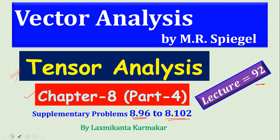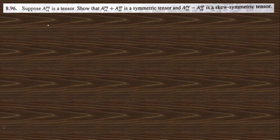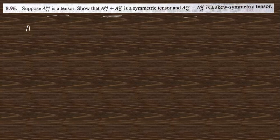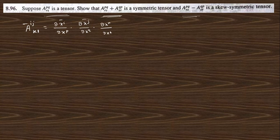Let us start with supplementary problem 8.96, which says that this is a tensor, so that the summation is a symmetric tensor and the difference will be a skew-symmetric tensor. Since this is a tensor, we can write the transformation property of the tensor: that is del x^i bar by del x^p, del x^k by del x^r, del x^j bar by del x^q, del x^s by del x^l into A_pqrs. This is the transformation.